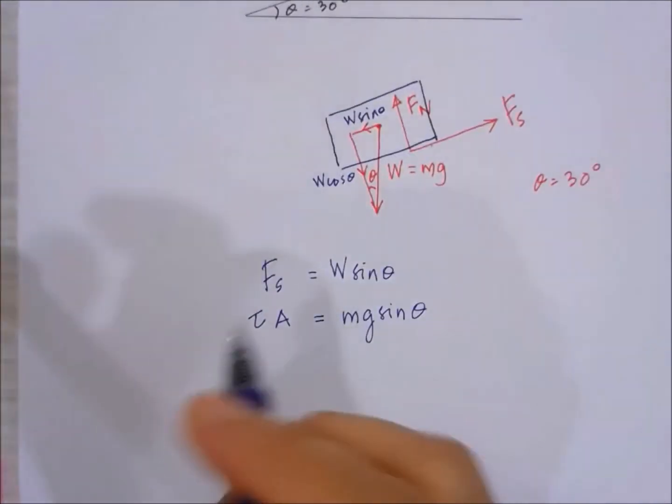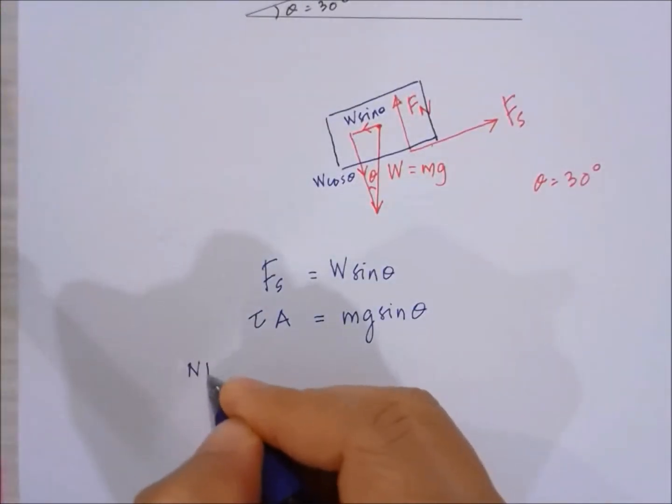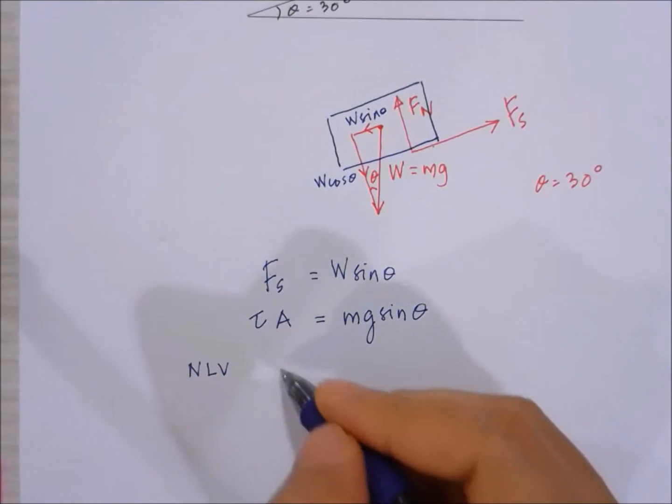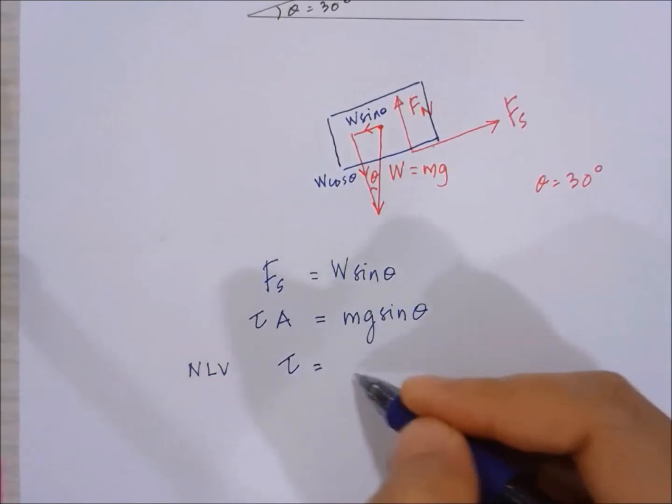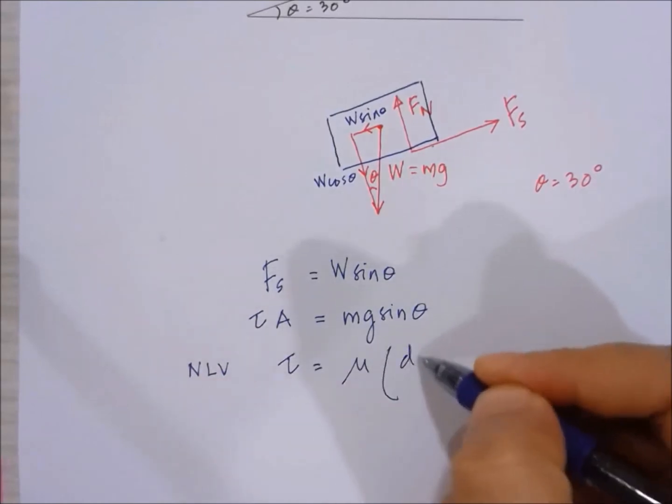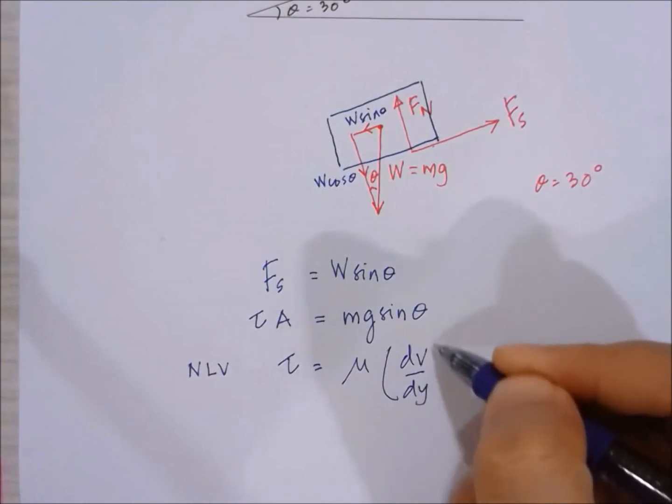But by Newton's law of viscosity, we know that tau is actually equal to mu dv by dy.